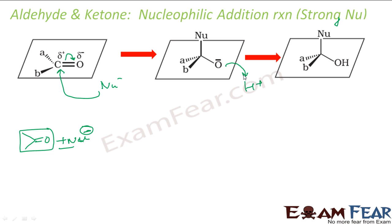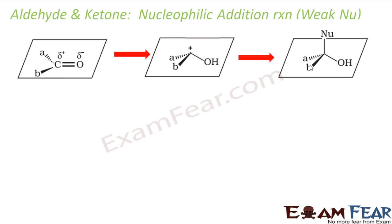Then an H+ will come and this O minus will attack this H+. That's how it happens when the nucleophile is strong. In the next case, the nucleophile is weak. In this case, first the H+ will come and attack the oxygen. This bond will break so that this becomes OH and carbon gets a positive charge - a carbocation. Then the weak nucleophile can easily come and sit on that carbocation.